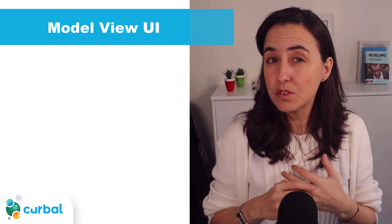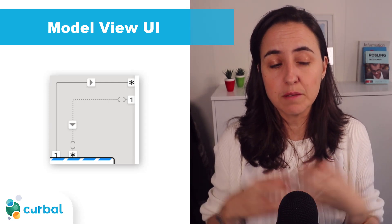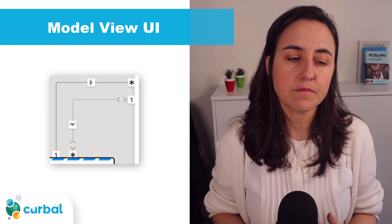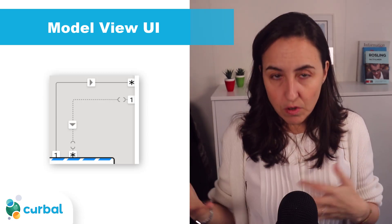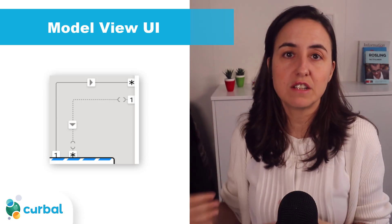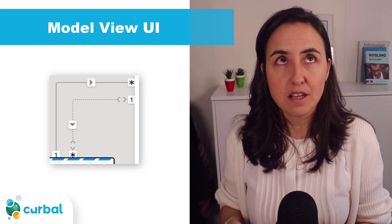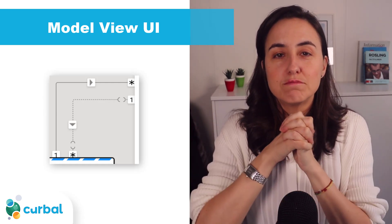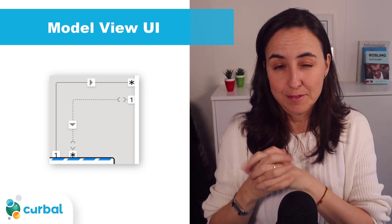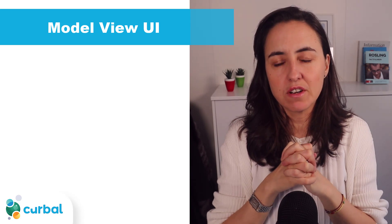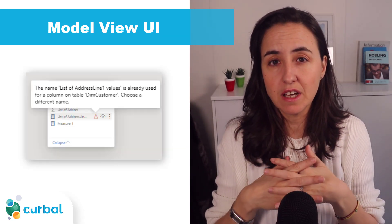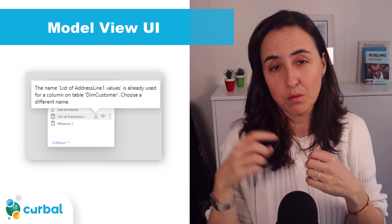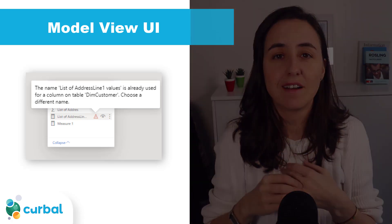They've also introduced a new icon for limited relationships. Limited relationships only appear on composite models — for example when you have DirectQuery together with import models, or on many-to-many relationships in composite models. A limited relationship means you cannot guarantee the one side of the relationship. Also, if you're connecting live to Analysis Services and a measure has an error, hovering over the error icon will now show you the error message.